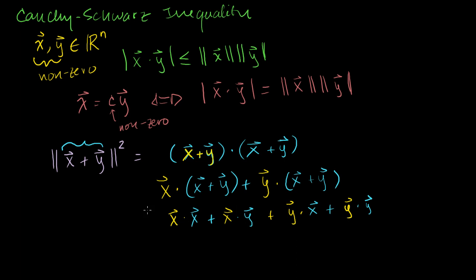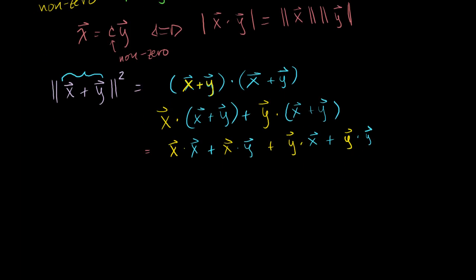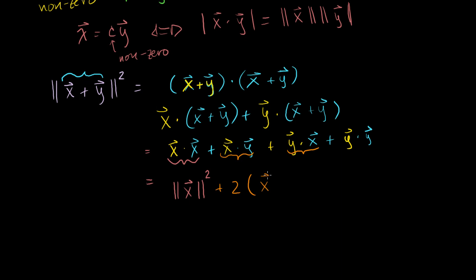So this equals: x·x is just the length of vector x squared. Then I have x·y and y·x, but we know that x·y and y·x are really the same thing — order doesn't matter when you take the dot product, just like regular multiplication. So those are the same terms, giving us plus 2 times (x·y). And finally y·y is the same thing as the length of vector y squared.